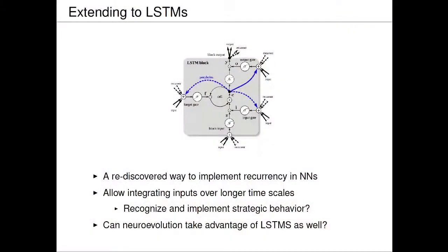Still, if you look at the behavior of that agent, it's not that complex — it's mostly reacting to what it's seeing, mostly tactical, not strategic. We'd like to implement strategic behavior, and here's where we can use LSTMs, created a long time ago. They give us the ability to remember things from further back. The recurrent networks shown so far do have memory, but it fades quickly. With LSTMs we can have longer memories and hopefully scale up to strategic behavior.